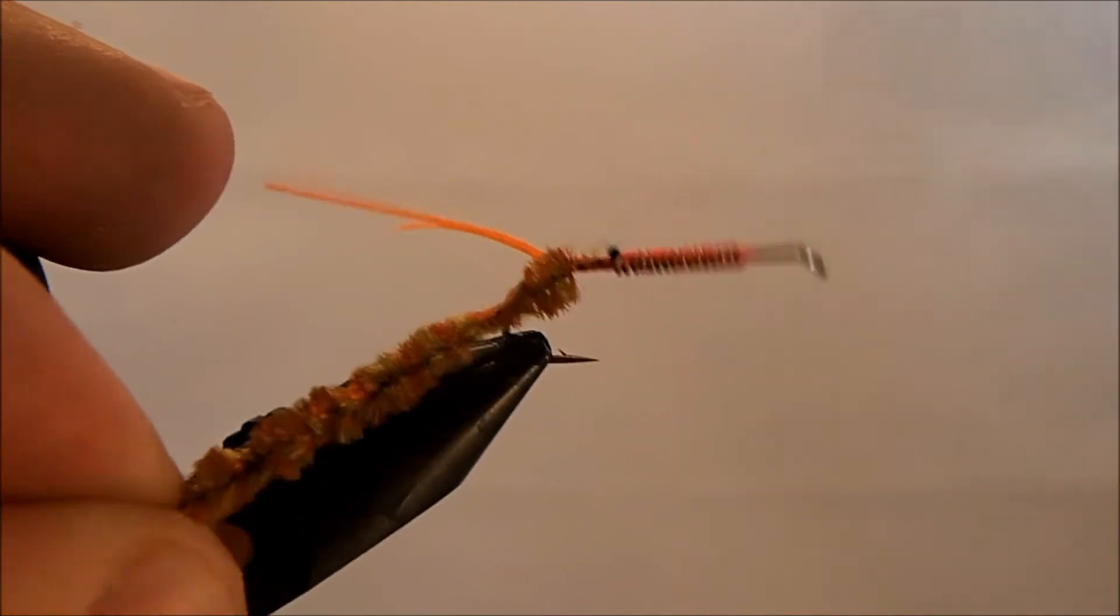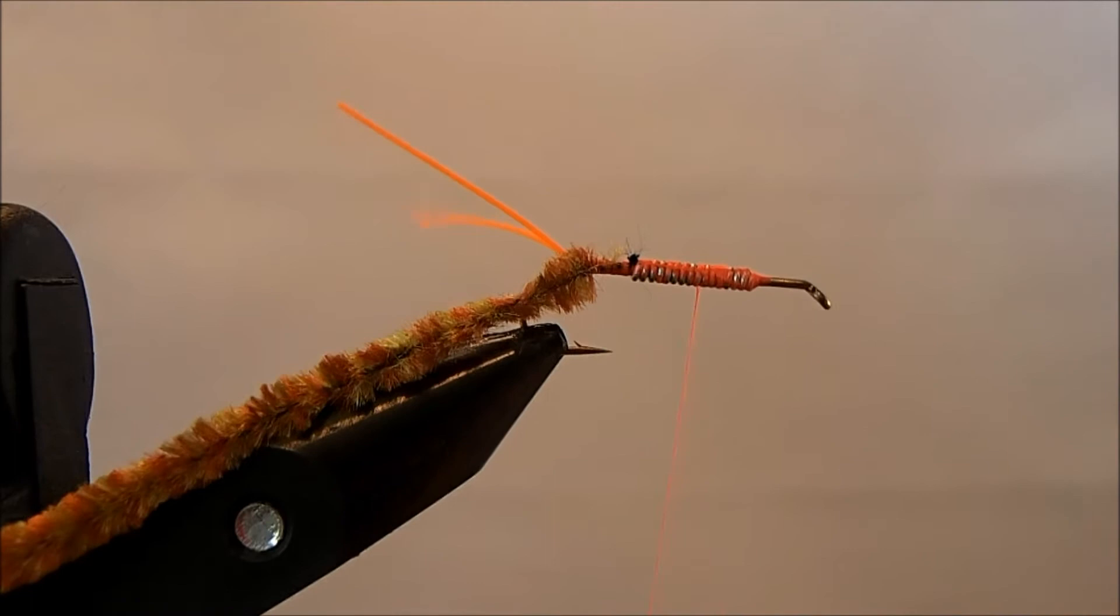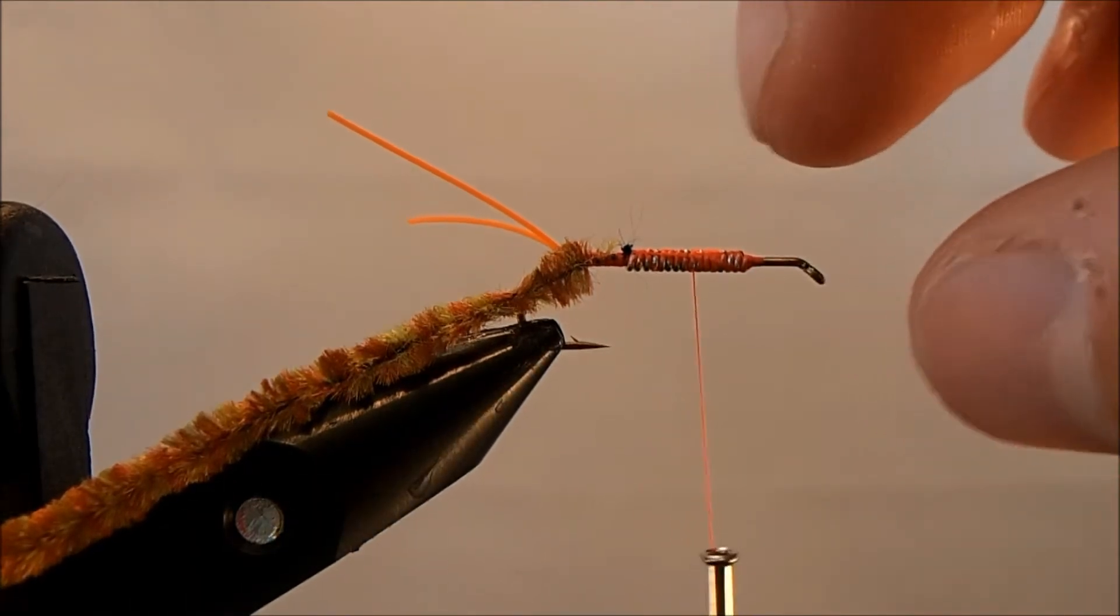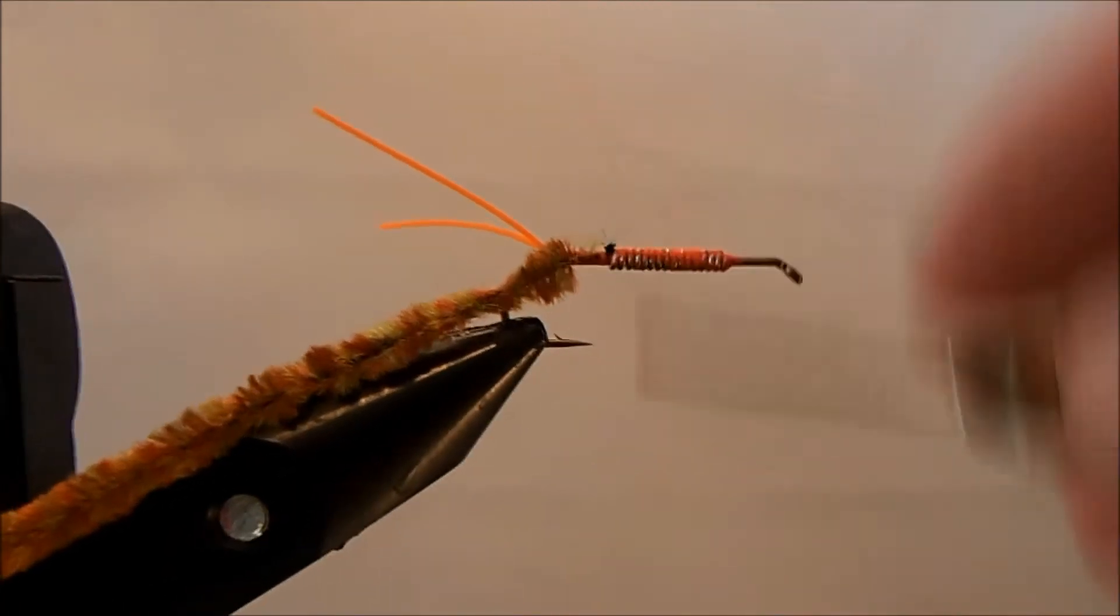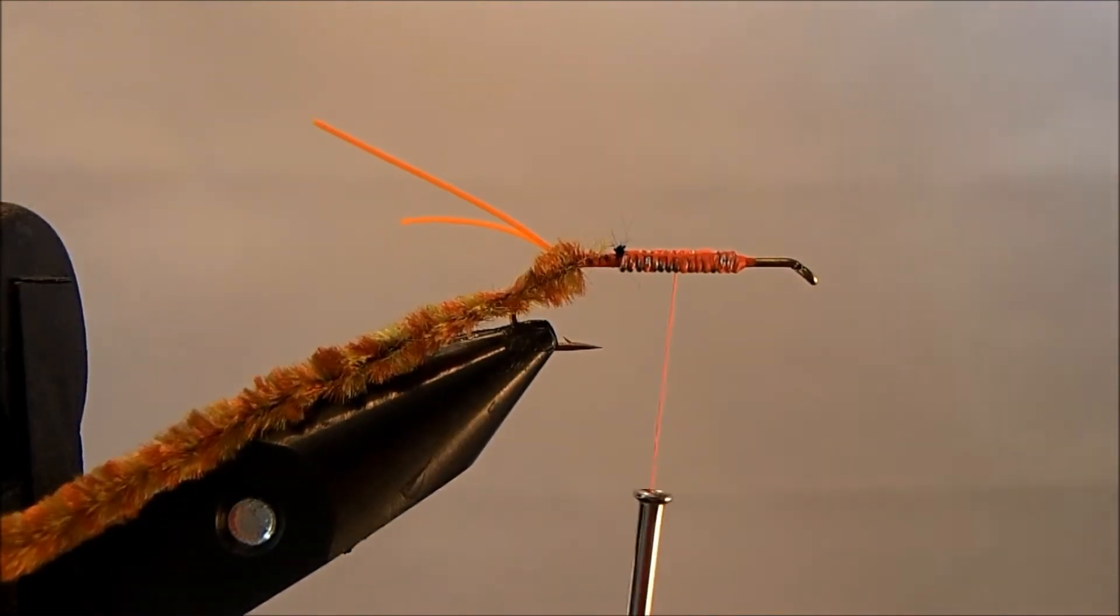I can bring my thread all the way up and I'm going to tie in my legs before I wrap the chenille. If I think about the hook shank, I want to be about halfway before I start my first leg. I'm going to tie this in on either side.